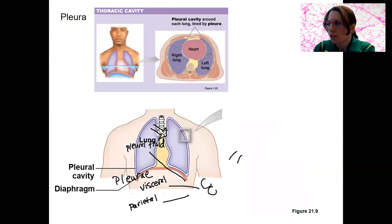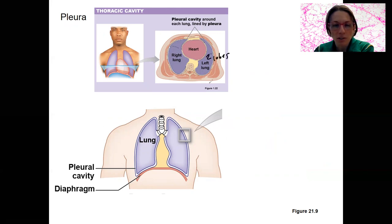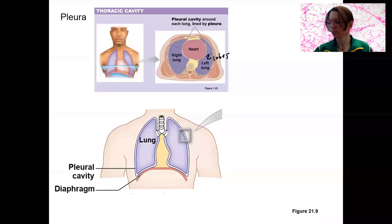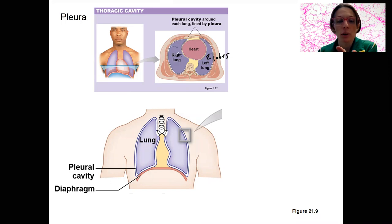Here is another image of the thoracic cavity. You can see how the heart takes up some space on the left side. So the left lung is only going to have two lobes because of the heart. Notice this image is looking from the feet up, so this is the left side with two lobes. The heart is more on the left side of the body. The right lung has three lobes.